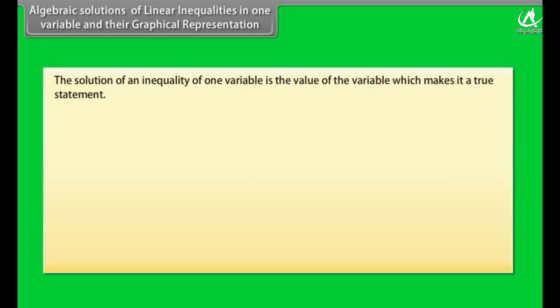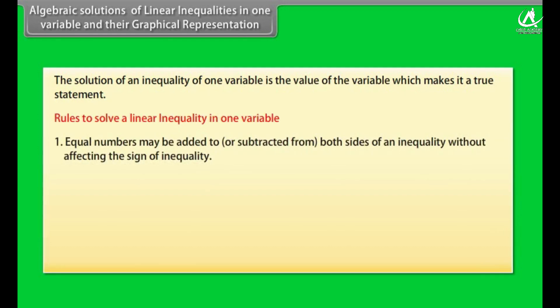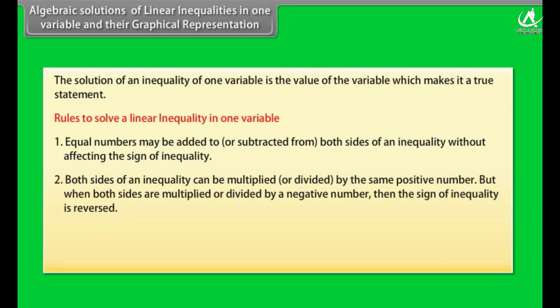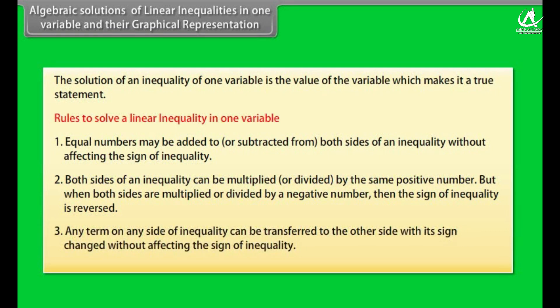Algebraic solution of linear inequalities in one variable and their graphical representation. The solution of an inequality of one variable is the value of the variable which makes it a true statement. Rules to solve a linear inequality in one variable: 1. Equal numbers may be added to or subtracted from both sides of an inequality without affecting the sign of inequality. 2. Both sides can be multiplied or divided by the same positive number, but when both sides are multiplied or divided by a negative number, the sign of inequality is reversed. 3. Any term on any side can be transferred to the other side with its sign changed without affecting the sign of inequality.